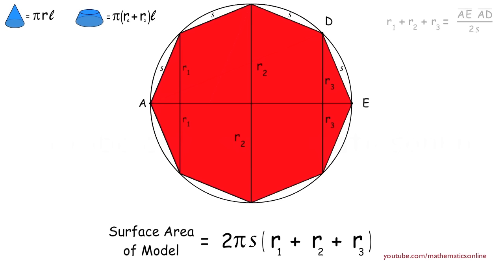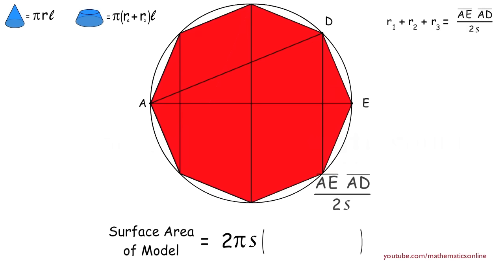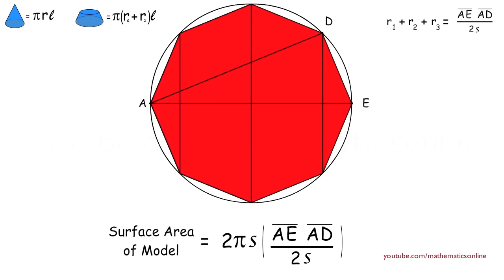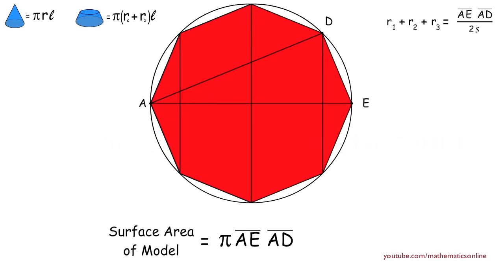Now notice that R1 + R2 + R3 is the equation we derived as a result of the similar triangles. Therefore, the surface area of the model becomes equal to 2πS times (line AE times line AD over 2S). The 2s cancel out and the Ss also cancel out, so the surface area of the model is now equal to π times line AE times line AD.